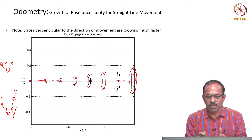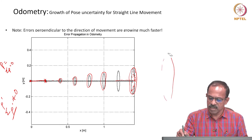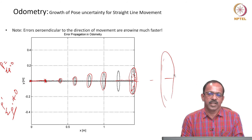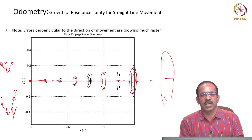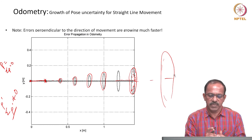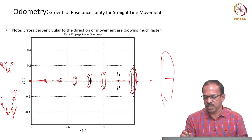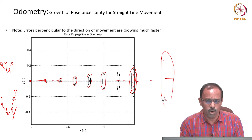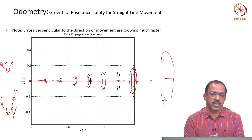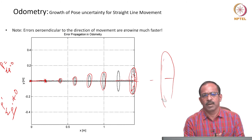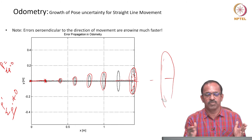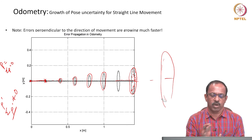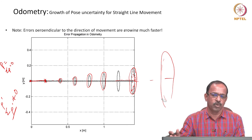The uncertainty becomes too high after extended movement, and meaningful localization can no longer be done using only odometry. For short durations, we can get a reasonable estimate, but for long durations the localization fails completely. Similarly on a curved path, the ellipse grows but uncertainty is always less along the direction of motion and larger perpendicular to it, since encoder measurements are only available along the direction of motion.